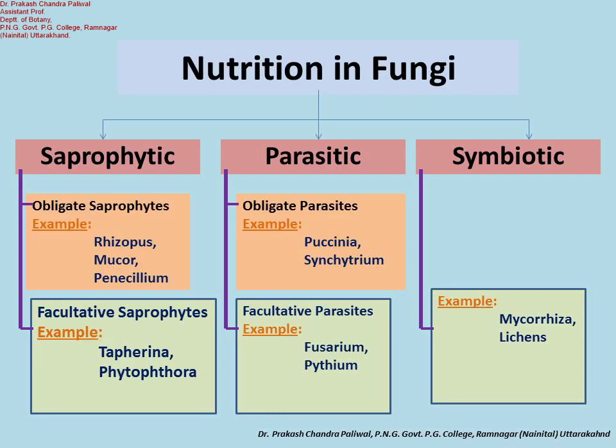Today we are going to discuss the nutrition of fungi, or the mode of nutrition in fungi. As we all know, true fungi lack chlorophyll, so they depend for their food on organic matter of plants and animals. True fungi are therefore heterotrophic organisms. They live either as saprophytes, parasites, or symbionts — there are three modes of nutrition found in fungi.